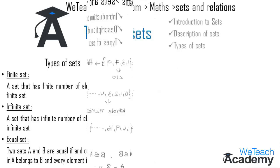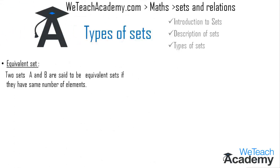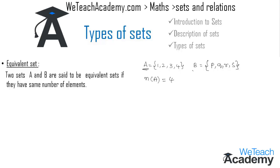Two sets A and B are said to be equivalent sets if they have the same number of elements. For example, let A = {1, 2, 3, 4} and B = {p, q, r, s}. The cardinality of both sets is 4. Since the cardinality of both sets is equal, we call them equivalent sets.